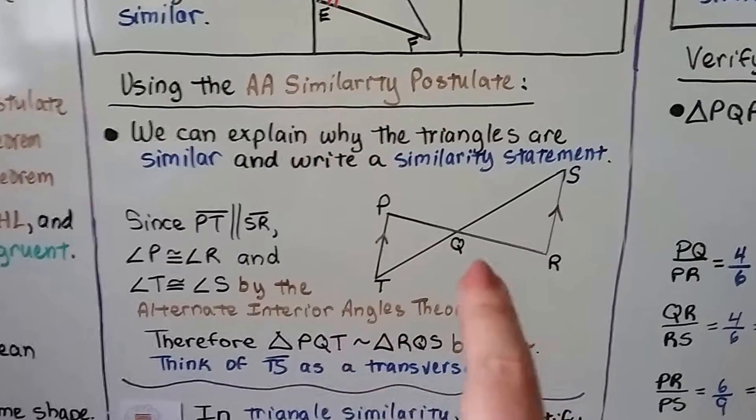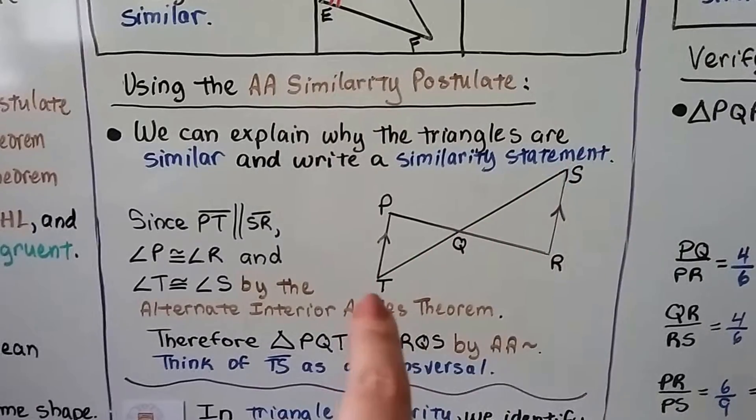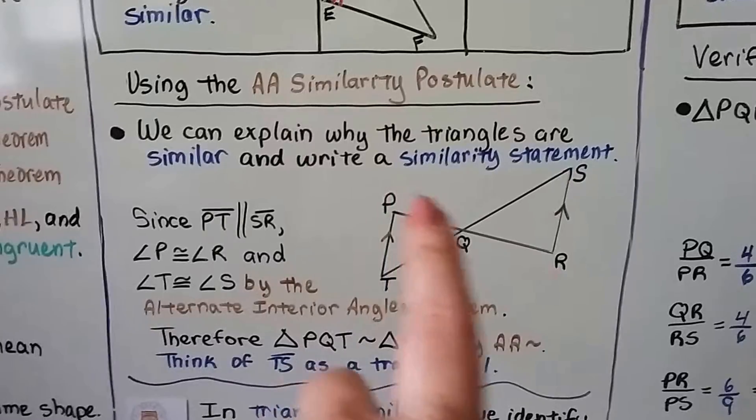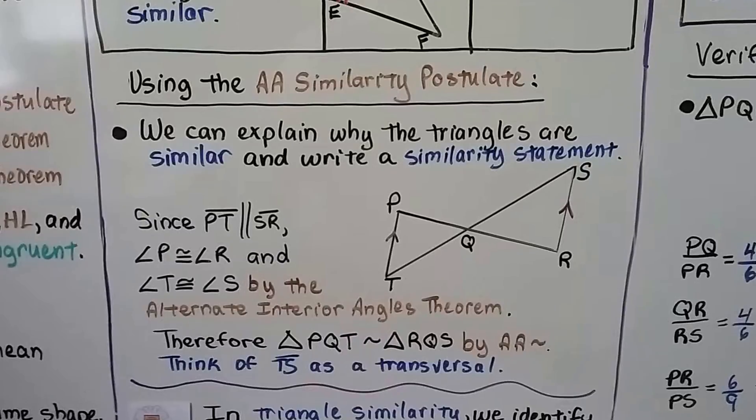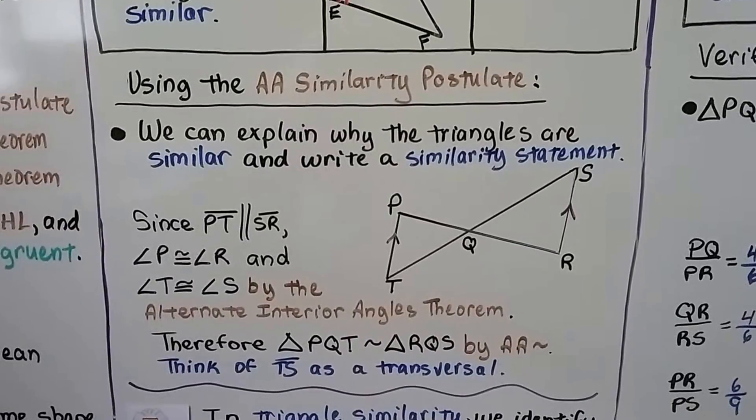If these are parallel, we can look at TS as a transversal, or we could look at PR as a transversal. Therefore, triangle PQT is similar to triangle RQS by AA similarity.